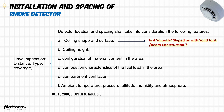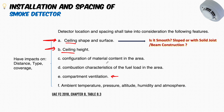Today we are talking more about the spacing of the smoke detector — what distance and spacing we shall keep between smoke detectors, and whether there are specific criteria or conditions to consider during design. The location and spacing shall take into consideration: ceiling shape and surface, ceiling height, ventilation or AC near the smoke detector, and combustion characteristics of the fuel load in the area. All these details may have an impact on the distance, type, and coverage of the smoke detector. Our course is based on the UAE Fire Life Safety Code of Practice, and this information is in Table 8.3.